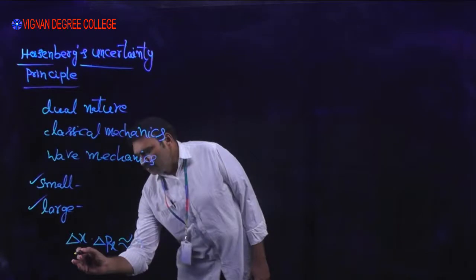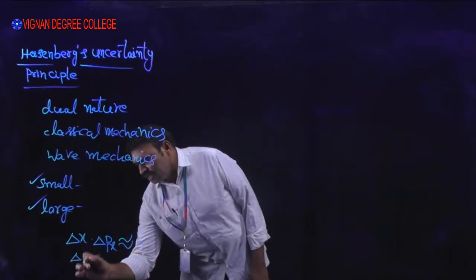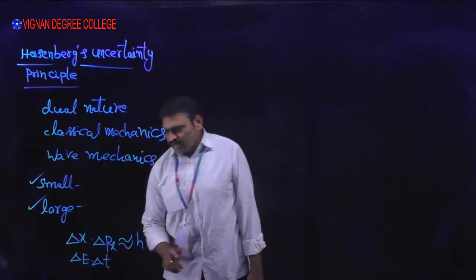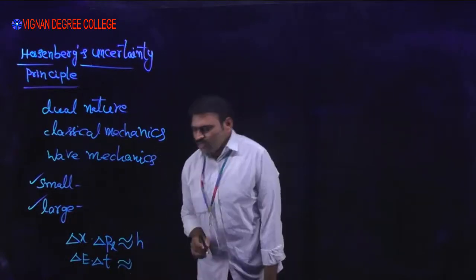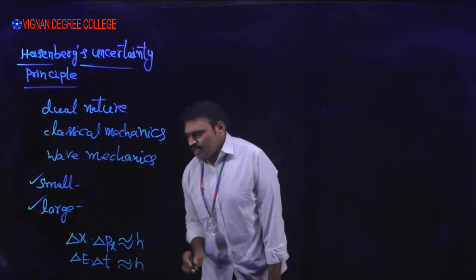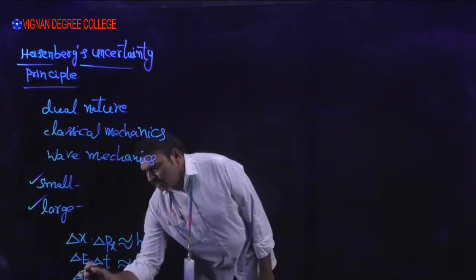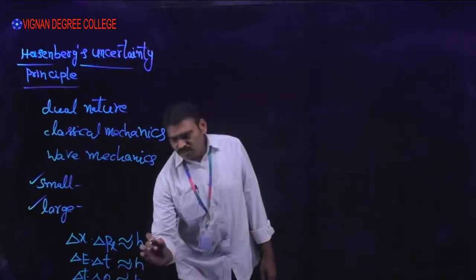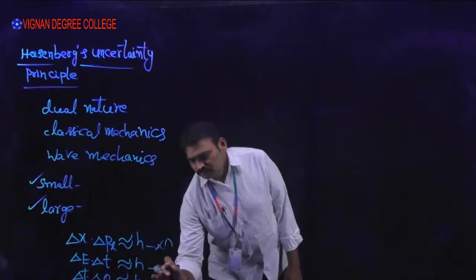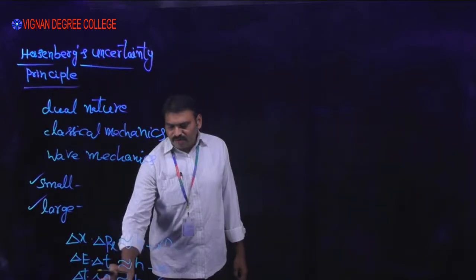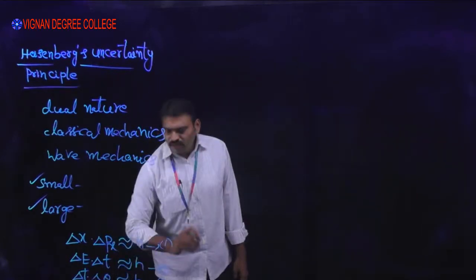Another pair of physical variables: ΔE · Δt ≡ h, where ΔE is the uncertainty in energy and Δt is the uncertainty in time. A third pair: Δj · Δθ ≡ h, where Δj is the angular momentum and Δθ is the uncertainty in angle. These are equations 1, 2, and 3 respectively.